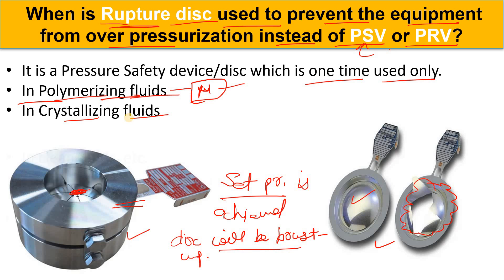We also use the rupture disk in clean fluid applications. For example, in a heat exchanger — suppose on the tube side there is a process fluid and on the shell side there is condensate — you could use a rupture disk there because it will not cause any harmful impact to the environment or personnel. When it ruptures, the environment will not be polluted since it is only condensate.